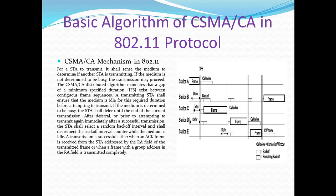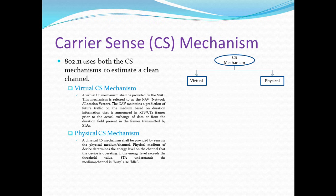A transmission is successful either when an ACK frame is received from the station addressed by the address field of the transmitted frame, or when a frame with a group address in the address field is transmitted completely.